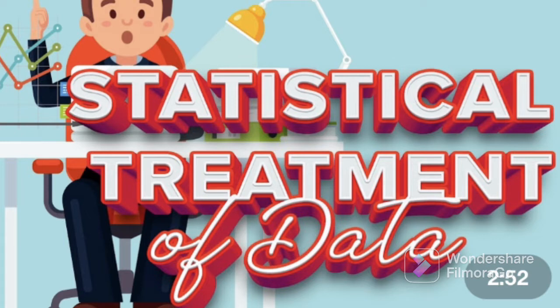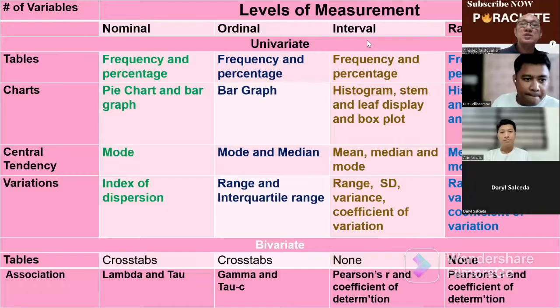In this table, we'll remind you of the levels of measurement that we use in quantitative research. You have the nominal, the ordinal, the interval, and the ratio data.